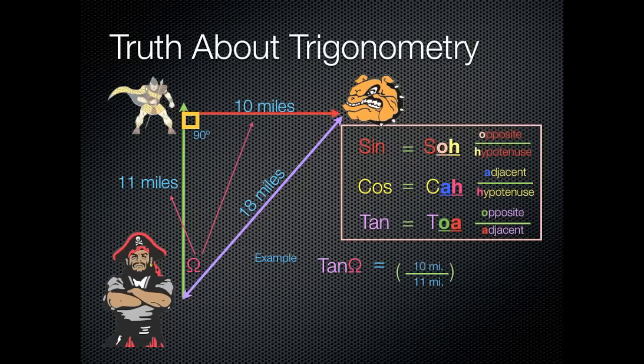I'm going to take the omega of tangent equals opposite of my angle 10 miles over the adjacent side of my angle 11 miles. I need to make my omega angle to equal tangent. So I subtract tangent from both sides, giving me omega equals tangent minus 1, 10 over 11.